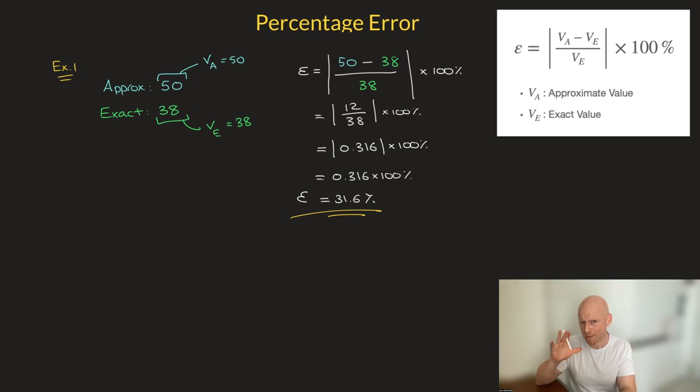So going back to my restaurant, when I said that I would have 50 customers on Saturday, the percentage error I made there was 31.6%. And because my approximation was greater than the exact value, I could say that I overestimated the number of customers I would have by 31.6%, which is a lot and would probably lead to lots of wasted food. That being said, let's look at a second example. And I'll just write here example 2.